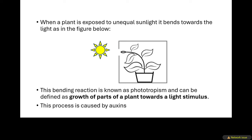This video will be discussing the process known as phototropism. This image illustrates what phototropism is. When a plant is exposed to unequal sunlight, it bends towards the light, as this figure suggests. You can see that the sunlight is striking only one side of the plant — it is not distributed equally on the plant.